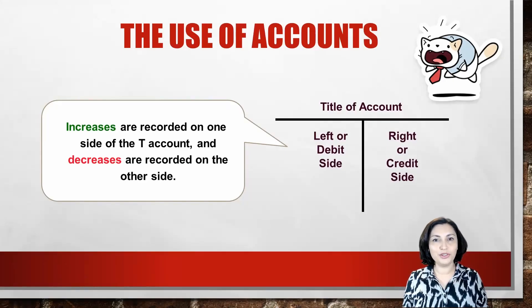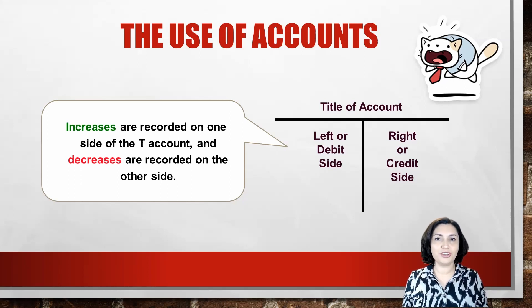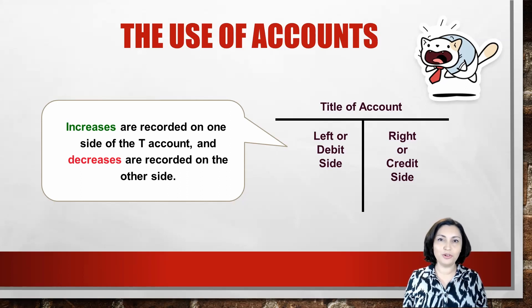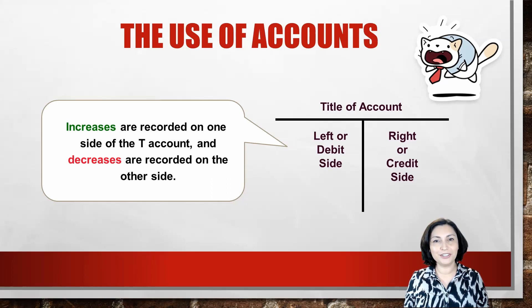You might want to think of a checkbook as an account. In the checkbook, cash receipts and disbursements are maintained in chronological order as well as the current account balance. All general ledger accounts are maintained in a similar manner. Accountants often use a T-account to represent a general ledger account.